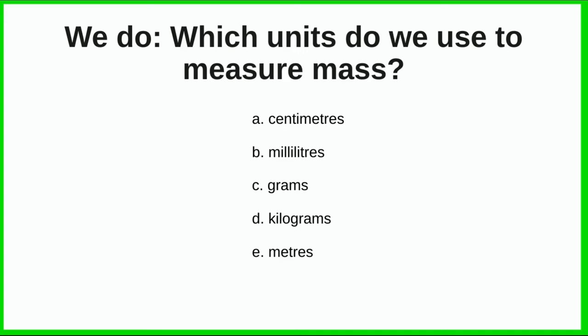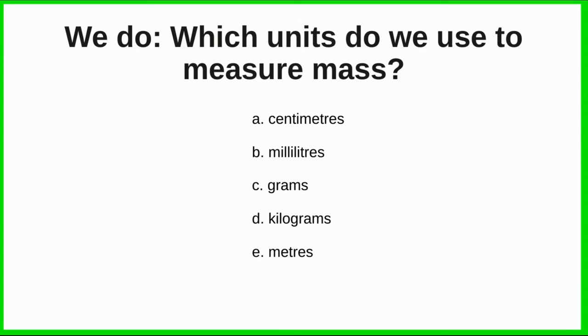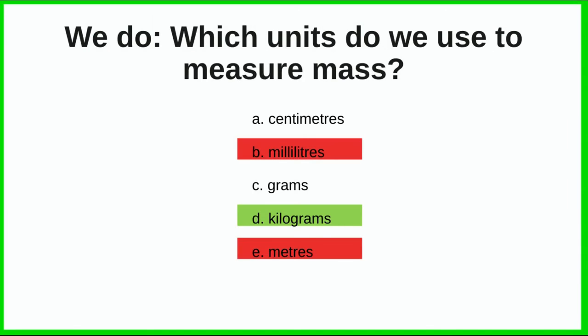Which units do we use to measure mass? Mass is about the weight of something. We have: centimetres, millilitres, grams, kilograms, and metres. Pause the video and think about which one measures mass. Kilograms and grams measure mass. Metres measures length, millilitres measures capacity, and centimetres measures length.